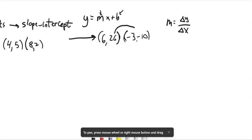So I need to think about how far is it from 26 to negative 10. I could do some subtraction for that. I could go negative 10 minus 26. So that goes down 36. And then I could say how far is it from 6 to negative 3. That's also going down. That goes down 9.